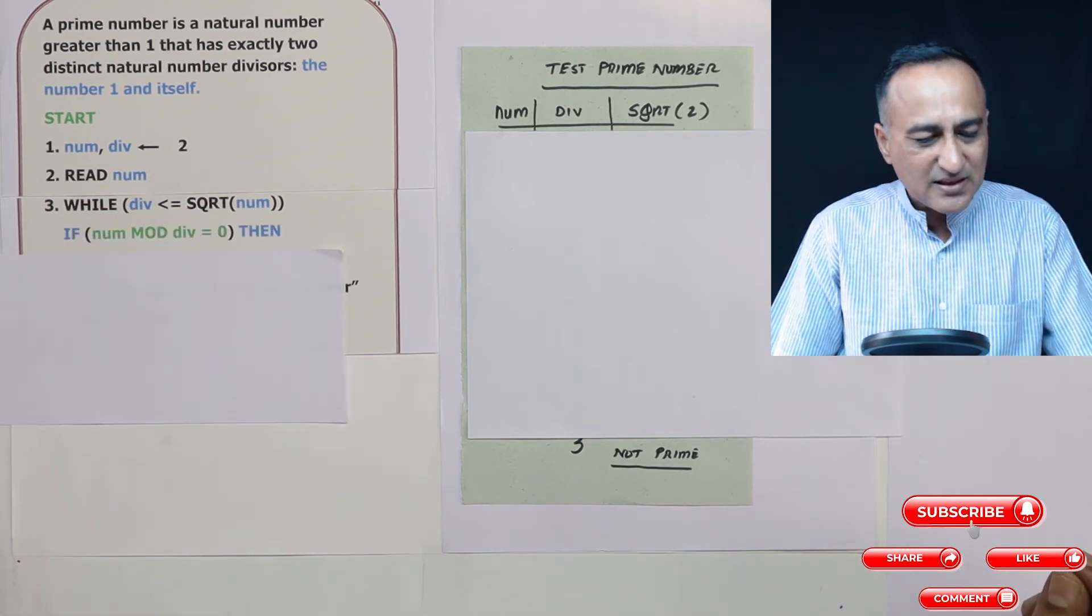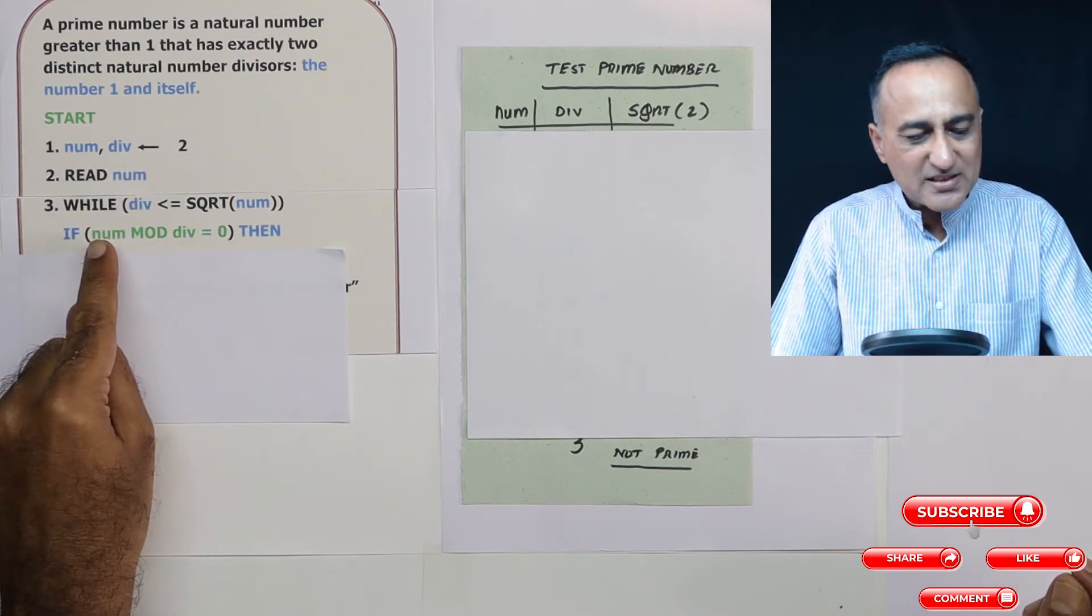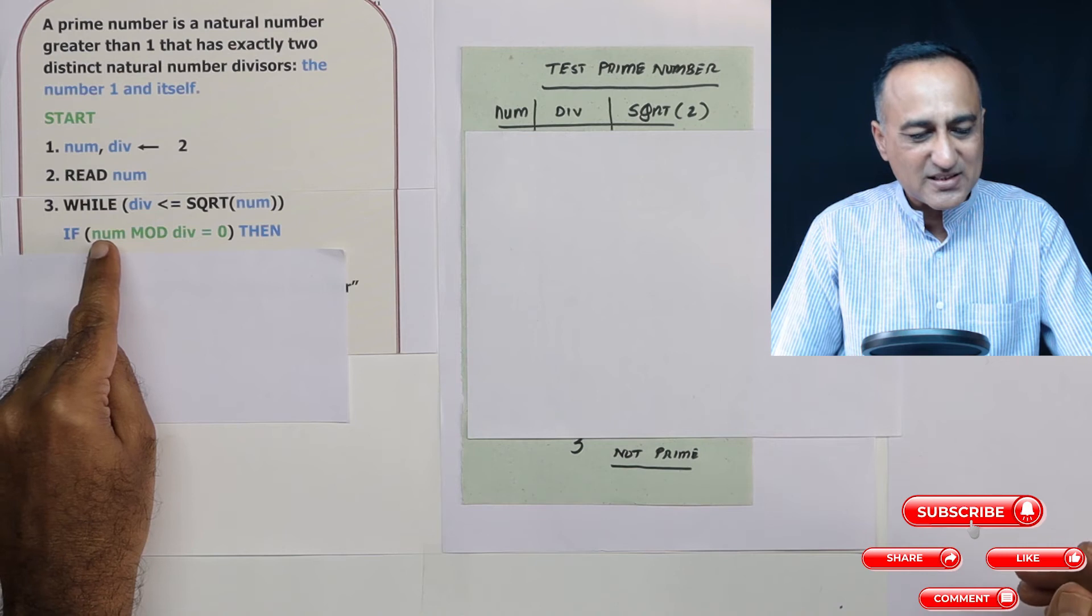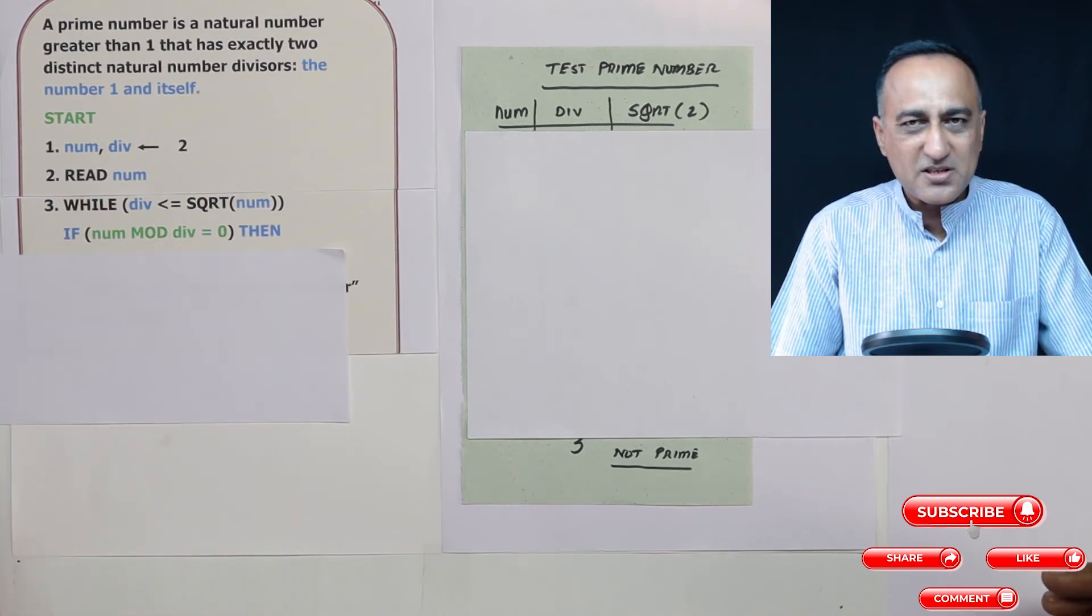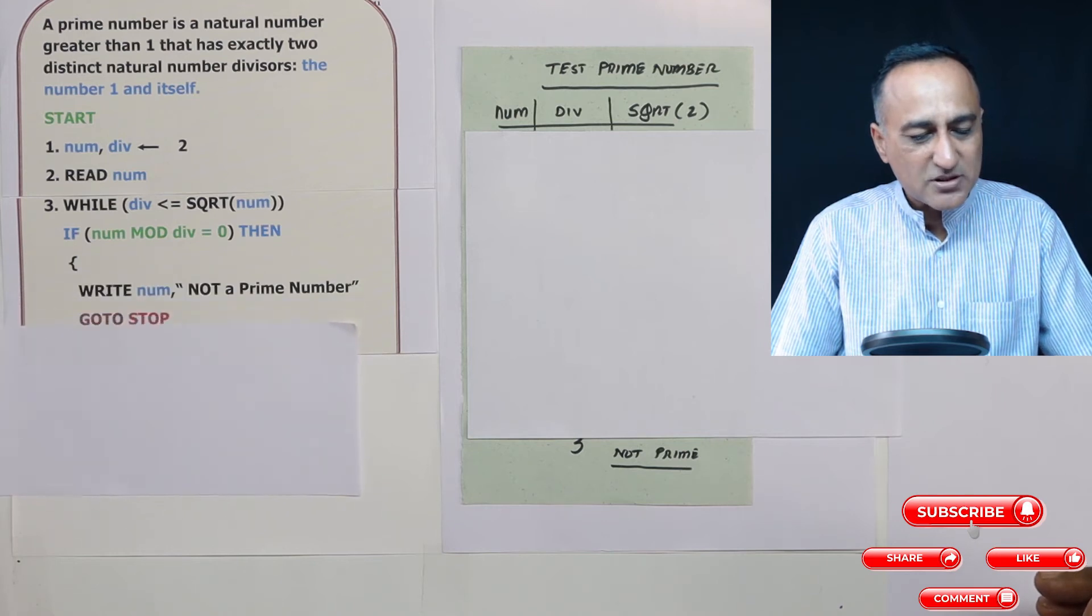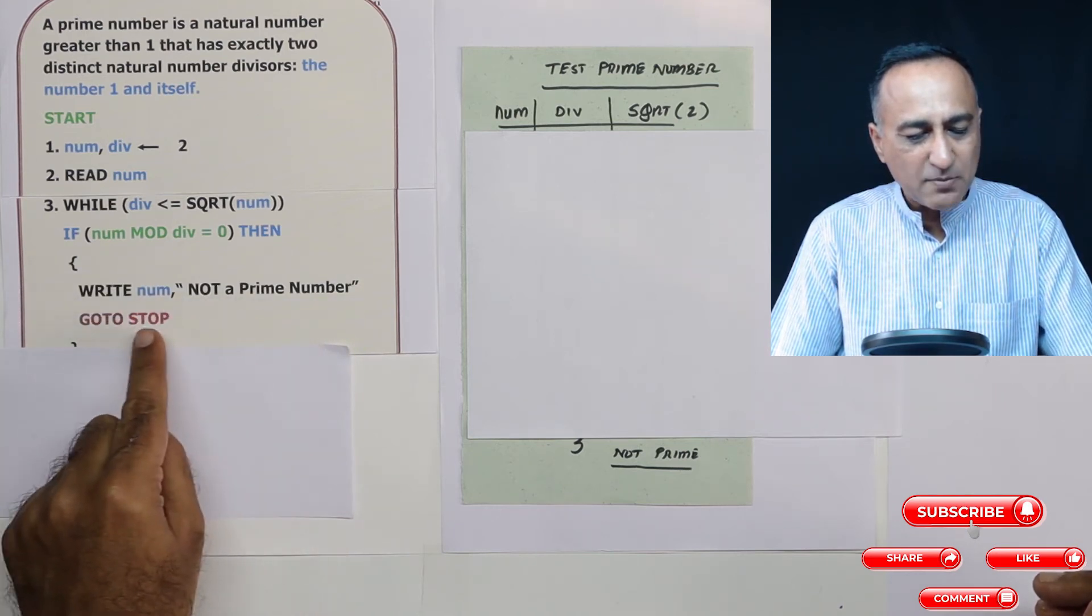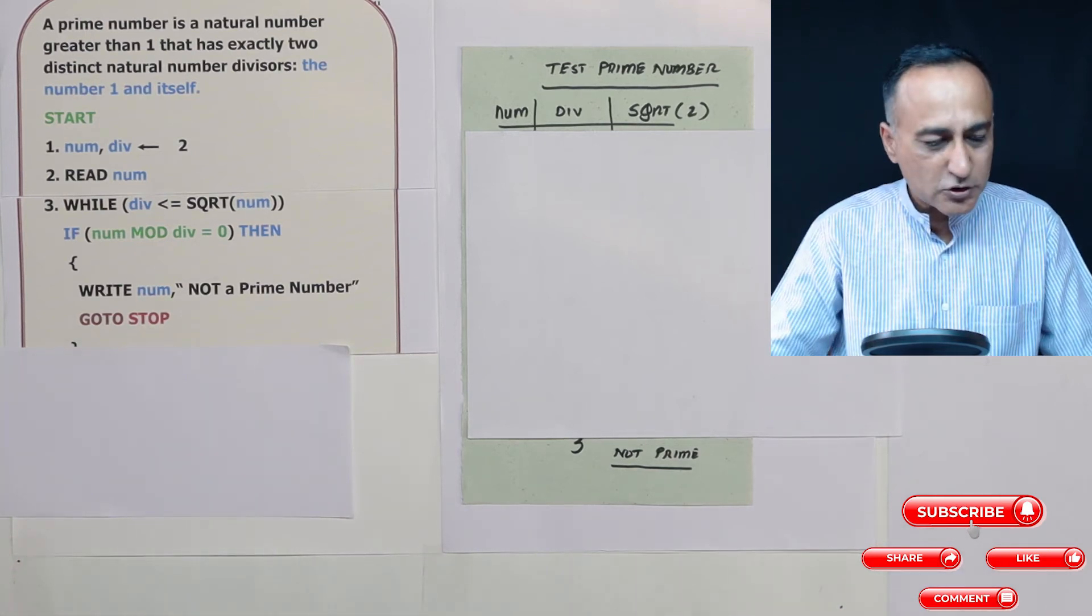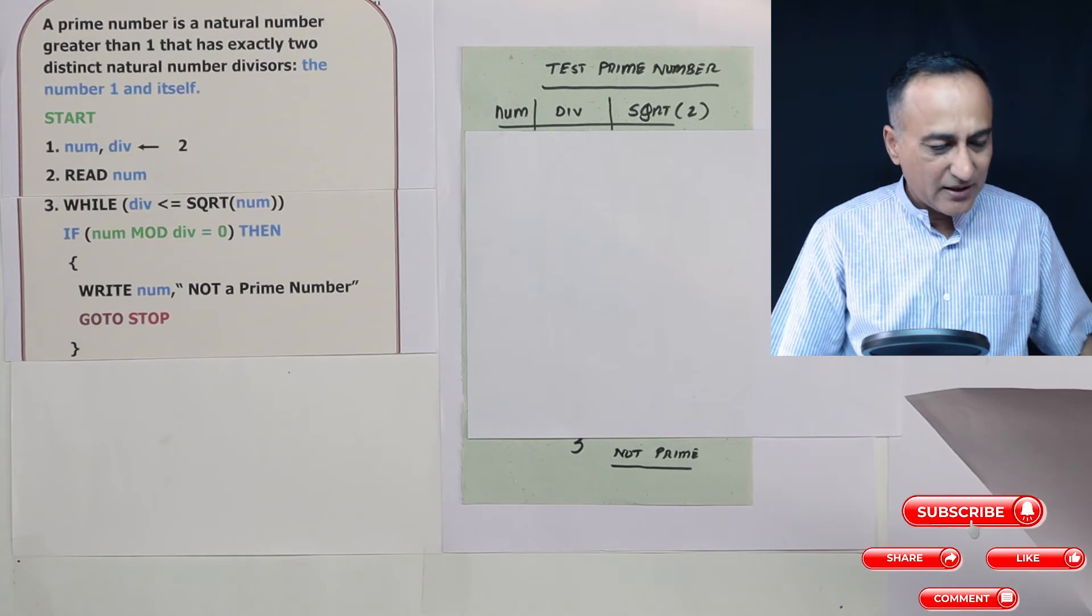The first step is I am trying to start with 2. If number is say 6, 6 mod 2 is 0, so that means it's an even number. Then I am going to say number 6 is not a prime number and I'm going to go to the end or going to stop. Now then there are other possibilities.